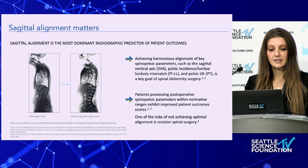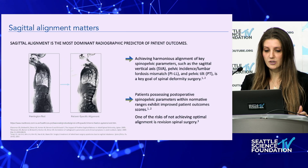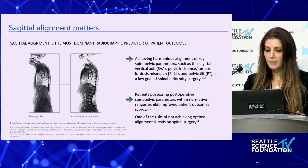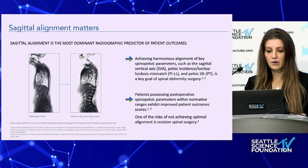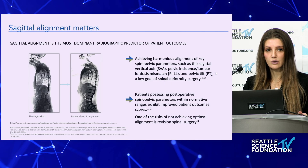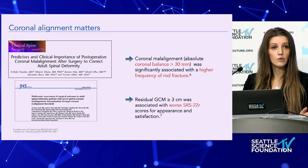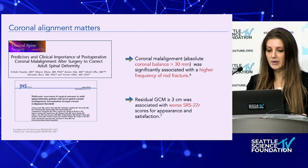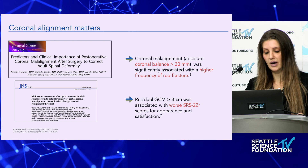Sagittal alignment really does matter — it's the dominant radiographic predictor of patient outcomes. If you achieve harmonious alignment, that's going to be key for a successful spinal deformity correction surgery. Patients possessing post-operative spinal pelvic parameters within normative ranges will exhibit improved patient outcome scores. One of the risks of not achieving optimal alignment is revision spine surgery, which yields increased cost to the health system and the patient. Coronal alignment also matters: coronal malalignment greater than 30 millimeters was significantly associated with a higher frequency of rod fracture and potential revisions.